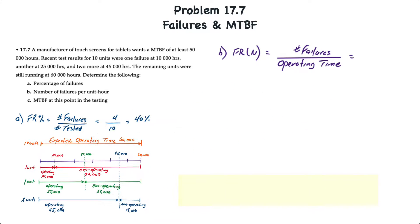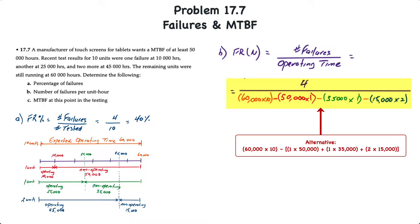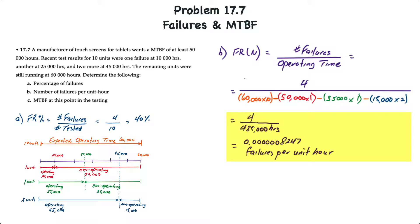Our calculation for FRN is 4 failures divided by 10 units times 60,000 hours — the expected total operating time — minus the sum of all non-operating times of failed units: one unit at 50,000, one at 35,000, and two units at 15,000 hours each. That gives us 4 divided by 485,000 hours, which results in 0.0000008247 failures per unit hour.